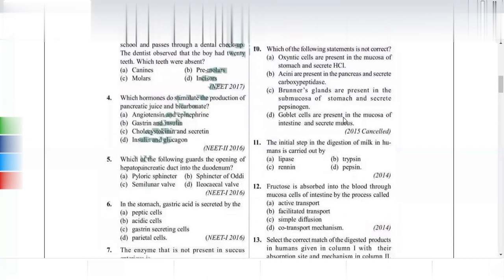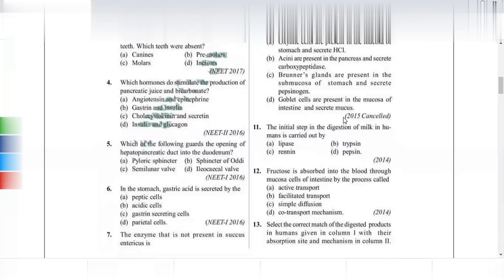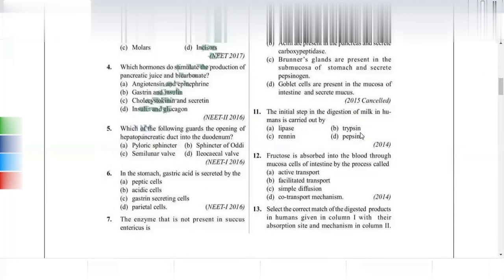The initial step in the digestion of milk in humans is carried out by renin. Renin converts milk into curd — it causes the curdling of milk. Trypsin cannot be found in the stomach, and milk is first digested in the stomach by renin.